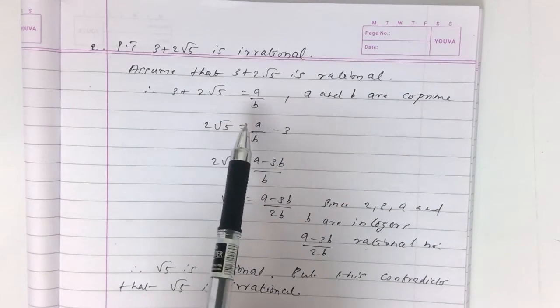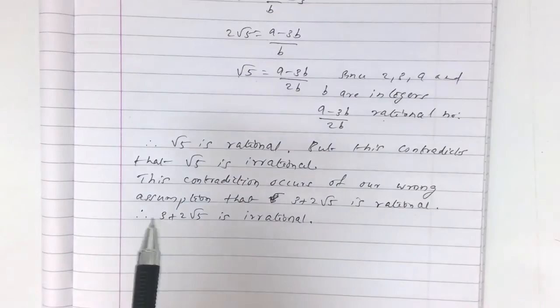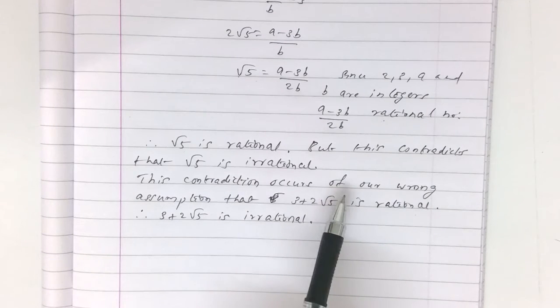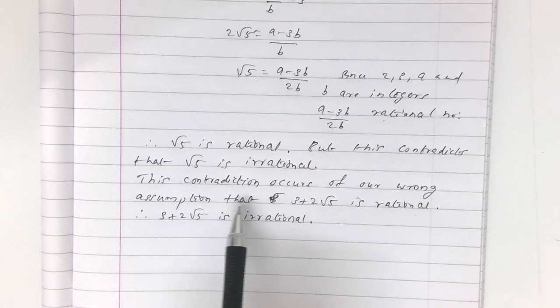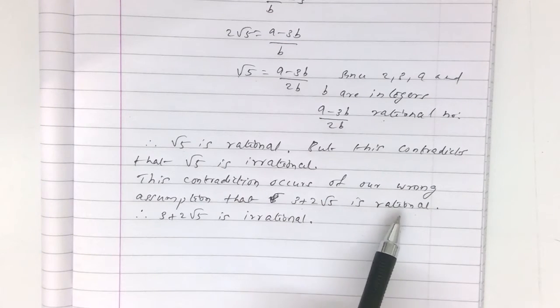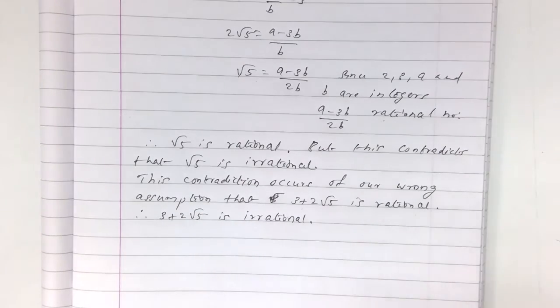This contradiction occurs because of our wrong assumption that 3 plus 2 root 5 is rational. Therefore, 3 plus 2 root 5 is irrational.